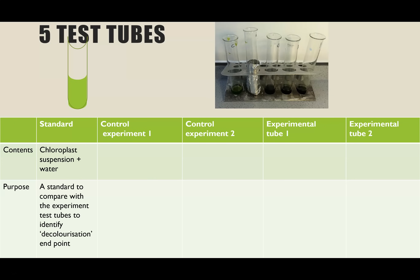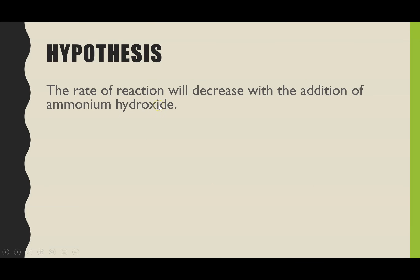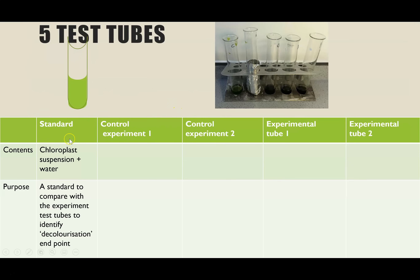For the method, I'm going to be setting up five test tubes. Only the last two are my experimental tubes where I'll be gaining the evidence or data to say whether the prediction is correct or not. The other three are to help with the validity of the experiment. I've got all five here already set up, and I'll show a diagram as well so you know what is in each tube.